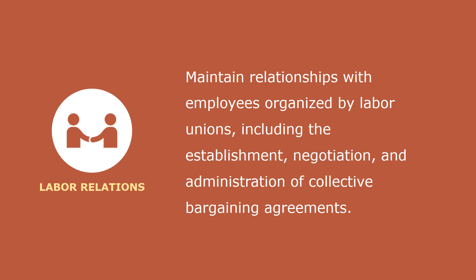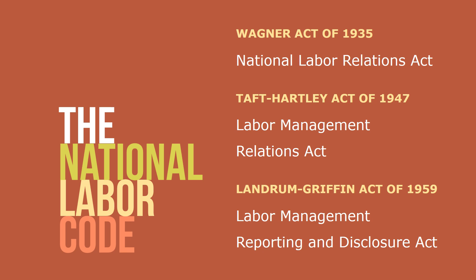Laws regarding labor relations help maintain relationships with employees organized by labor unions, including the establishment, negotiation, and administration of collective bargaining agreements. Three acts passed over almost 25 years constitute the foundation of United States Labor Law: the Wagner Act, the Taft-Hartley Act, and the Landrum-Griffin Act — also known as the National Labor Relations Act, the Labor Management Relations Act, and the Labor Management Reporting and Disclosure Act. Each act focused on some facet of the relationship between unions and management, and jointly they are referred to as the National Labor Code. For more detailed information, check out Gregg Learning's HR Basics Labor Relations — I'll post a link to that video below.